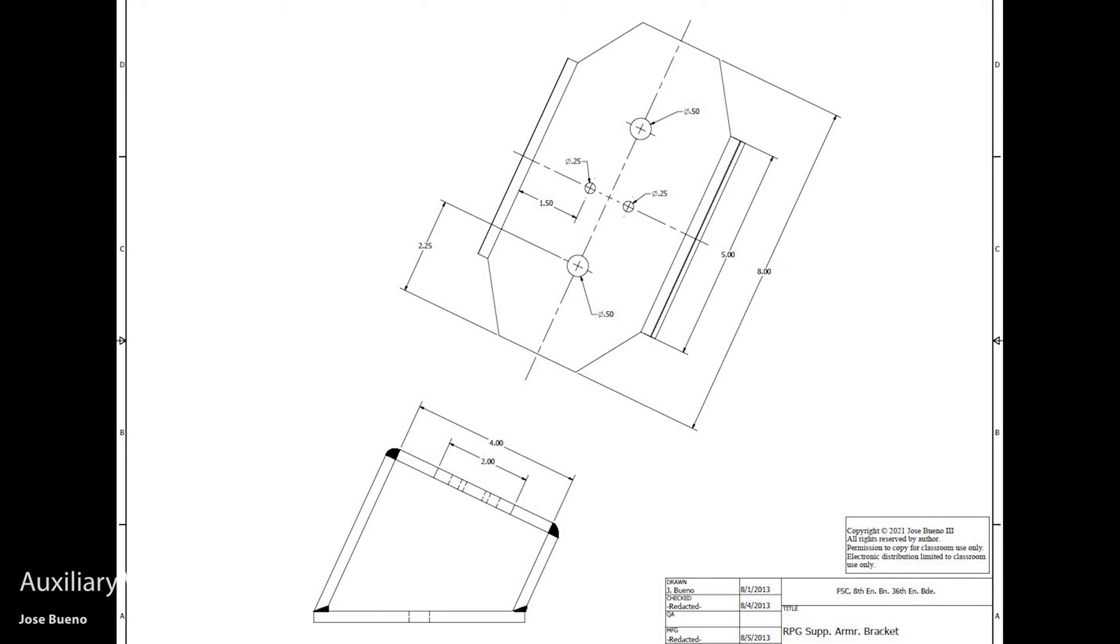So that's pretty much auxiliary views. It's just an additional view from a different angle that will allow you to look at a surface or a part of something that you're building that happens to be angled or slanted or something like that to where it cannot be accurately drawn or accurately depicted using an orthographic view.